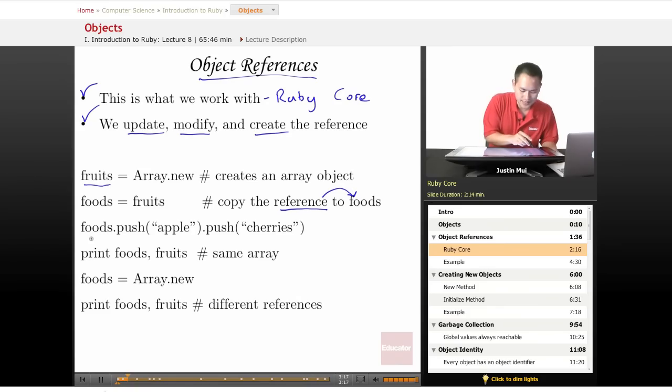So you'll notice here on the next line, we do a foods.push apple. So it stores the apple into the foods array. And then you do a push cherries, which also pushes into that foods array. So we take a look now. We have our array here with apple and cherries. Now, if you print that array out, the food and fruits will have the same array.